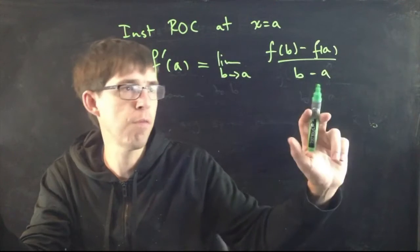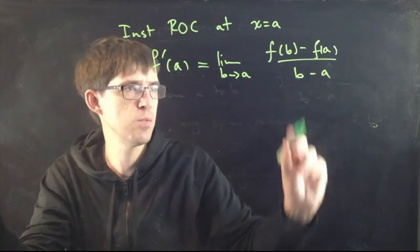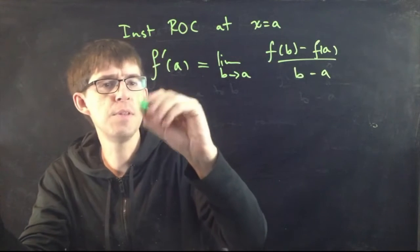When you do this, since this is a limit where the b is approaching the a, eventually the b's will sort of disappear from this formula. And all you get is something in terms of a, which we call the instantaneous rate of change at a. And we write f prime of a. Actually, so this is an important formula, but in our book, they don't write it this way. They write it in a slightly different way.